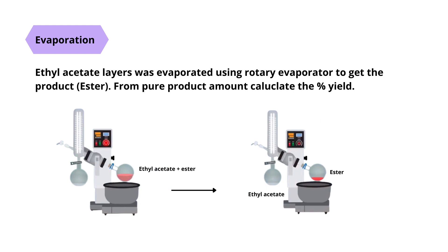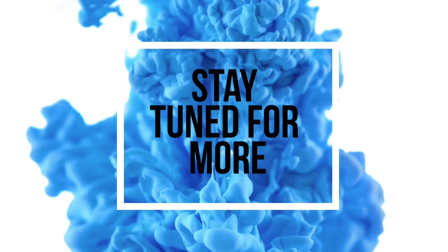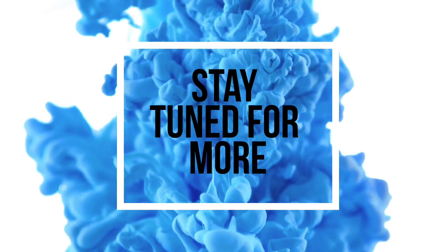The ethyl acetate layers were combined and evaporated using a rotary evaporator to obtain the product ester. From the amount of pure product, calculate the percent yield. Thanks for watching.